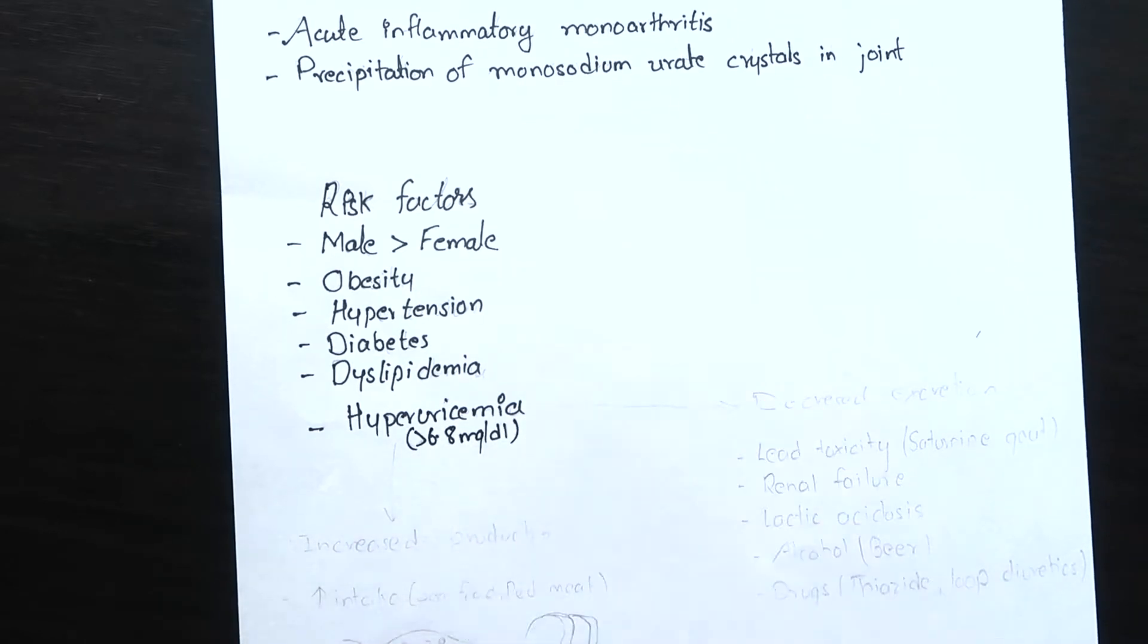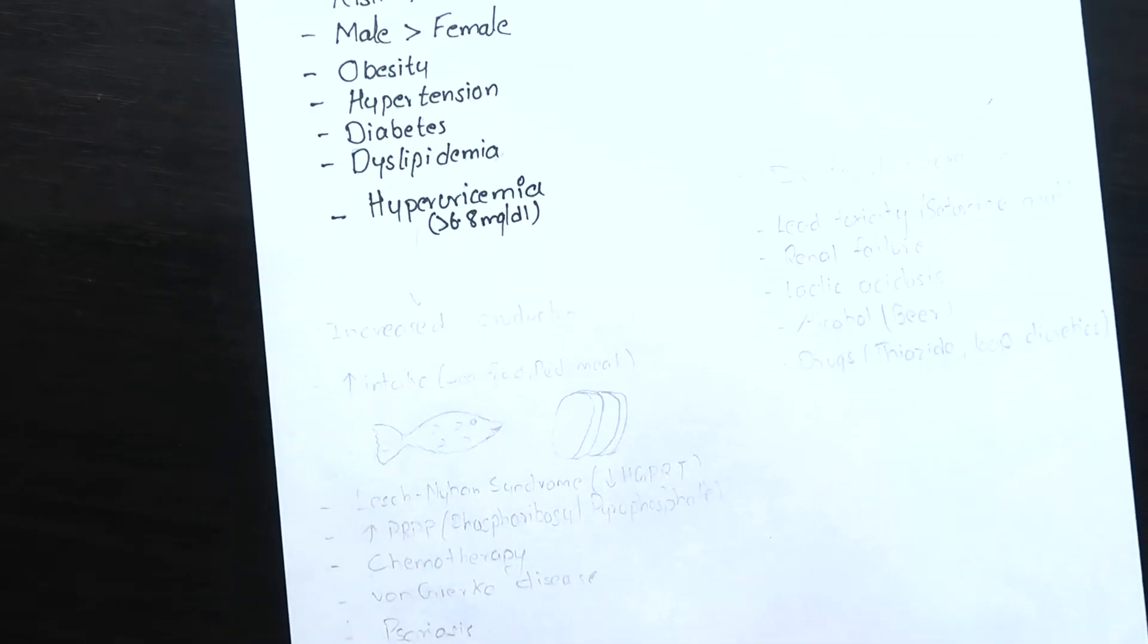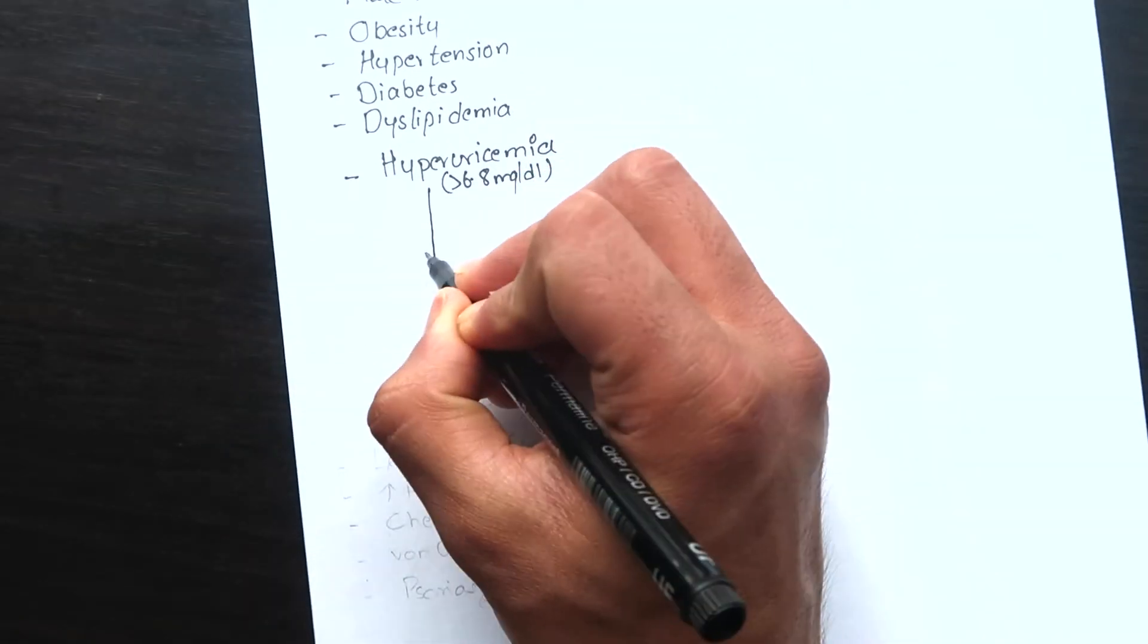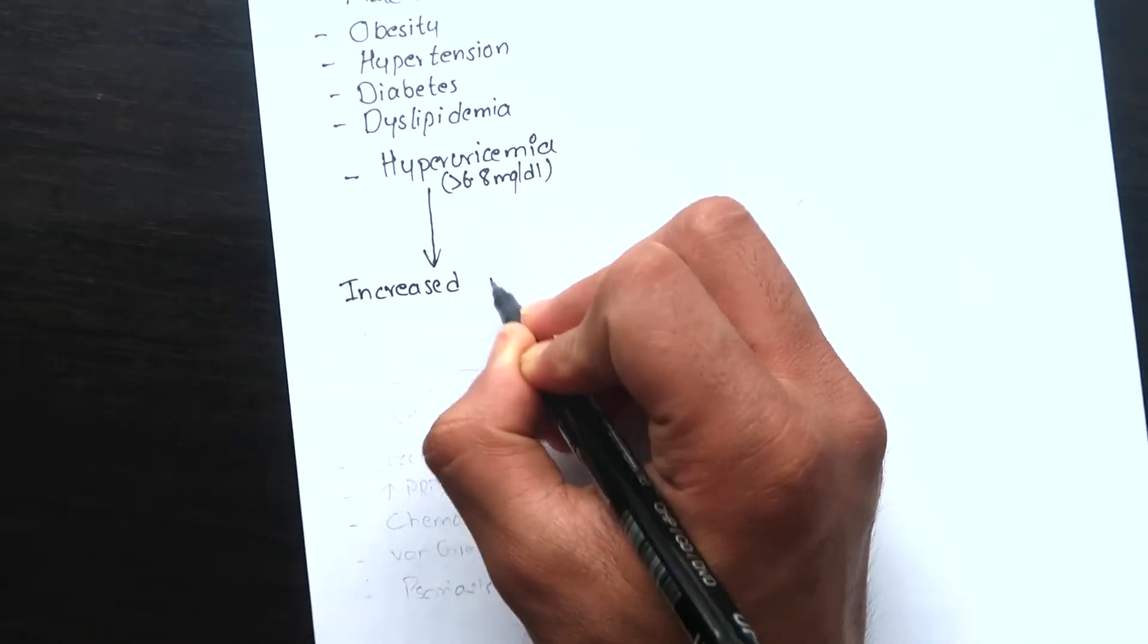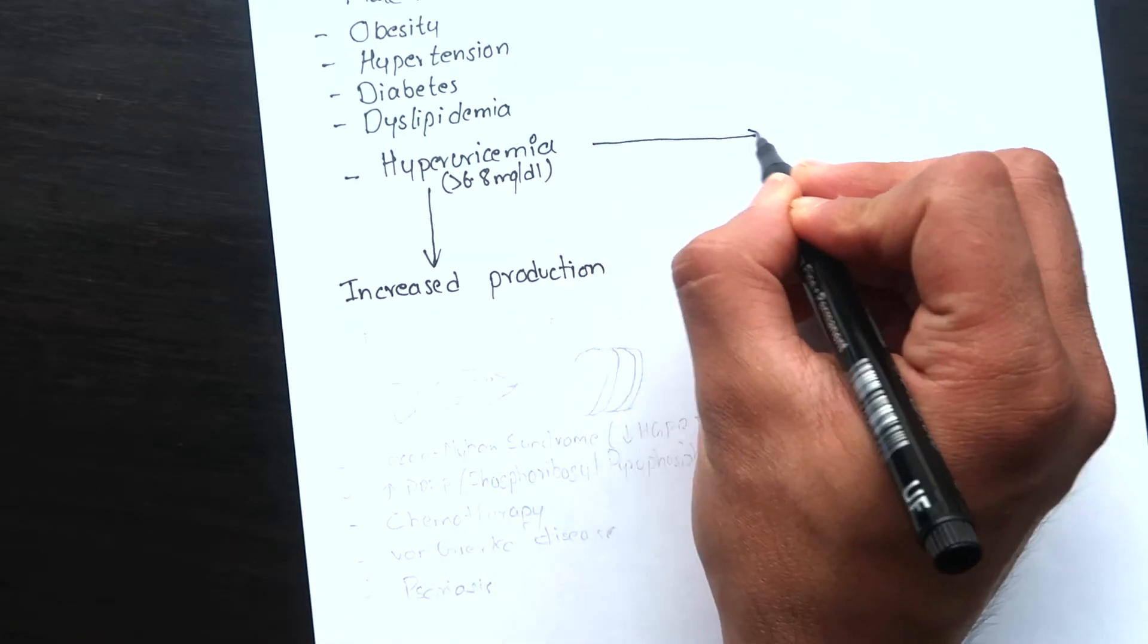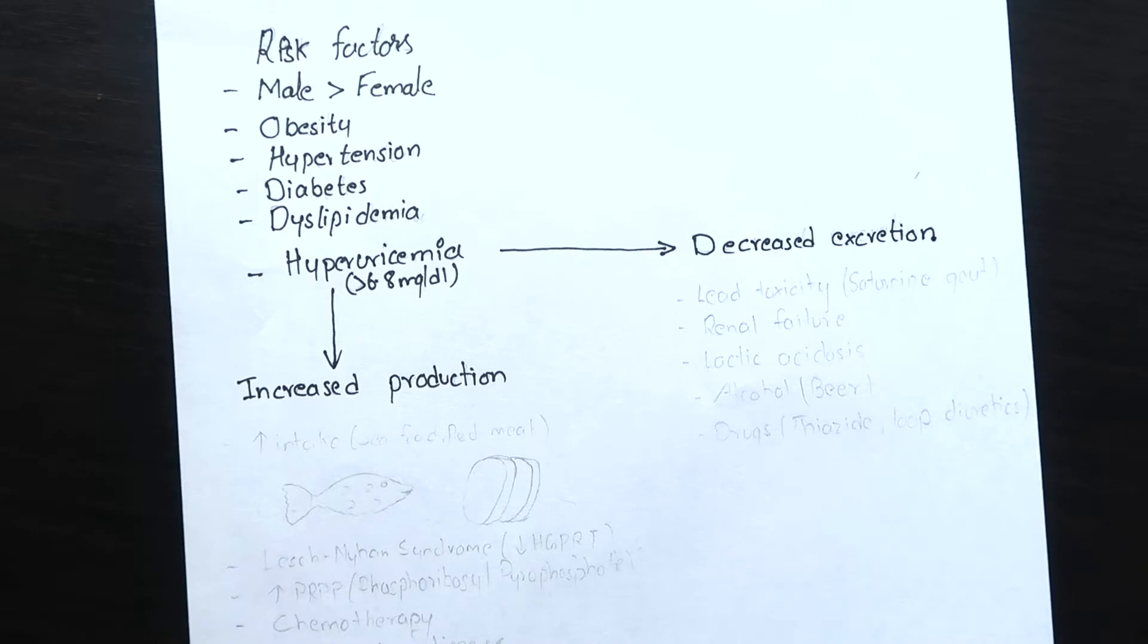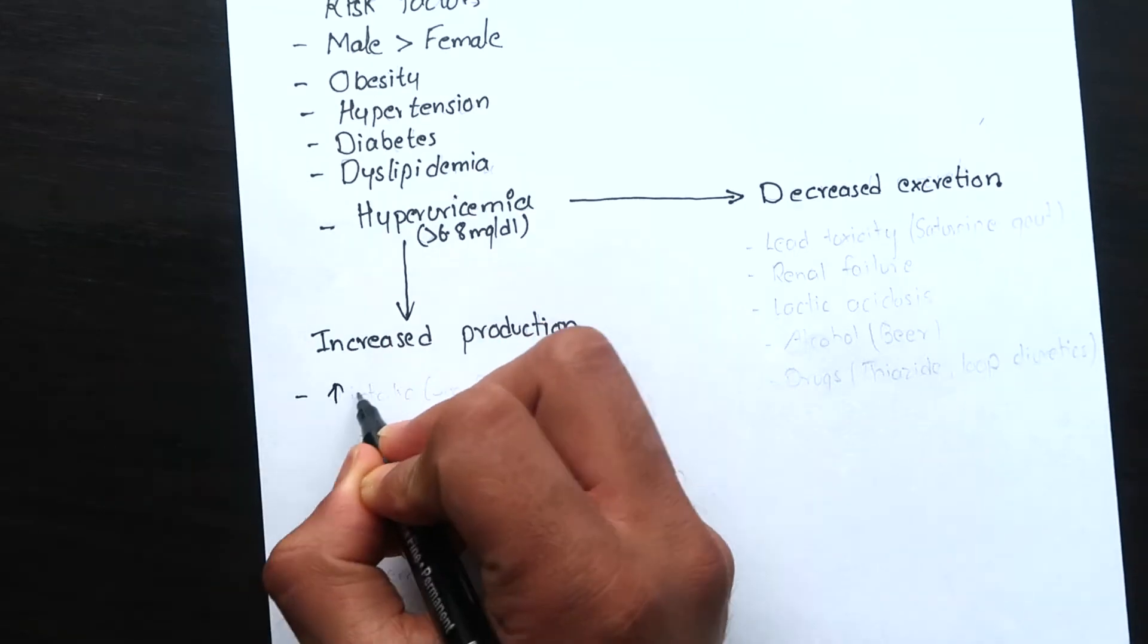Now before moving on to how hyperuricemia causes gout let's learn what are the causes of hyperuricemia. They can be divided into two classes: those that increase the production of uric acid and others that decrease the excretion.